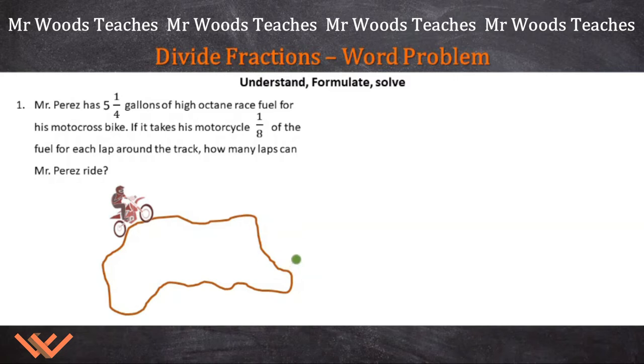Well, let's reread this and pull out some key information. It says here, Mr. Perez has 5 and 1/4 gallons. Okay, so that's what he has. And it takes his motorcycle 1/8 fuel for each lap. So we know that he's running his motorcycle around this track here. And it takes 1/8 of all of this to go around the track. What we want to find is how many laps can Mr. Perez ride? That's the ultimate answer right there.